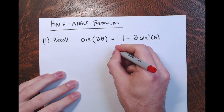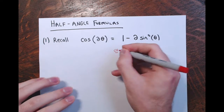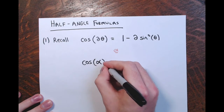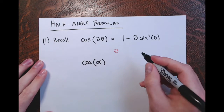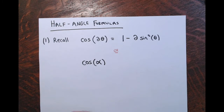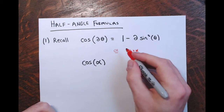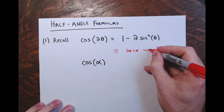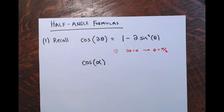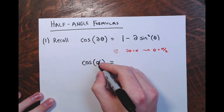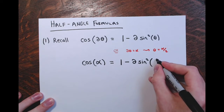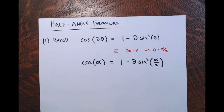Another way I could write this is the cosine of some angle — I'll call it alpha. So I replace two theta with alpha, meaning that theta is half of alpha, alpha over two. So the cosine of an angle alpha would be equivalent to one minus two times the sine squared of half of that angle, of half of alpha. So our double angle formulas are just like a half angle formula.